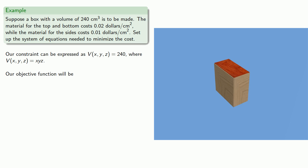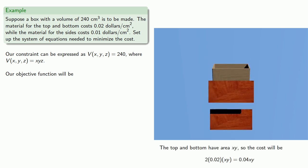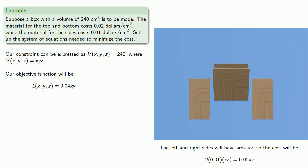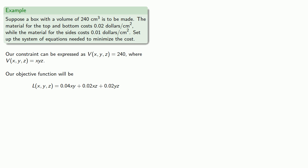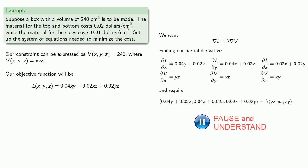Now we're trying to minimize the cost, so let's explode the box and determine what our cost function is. The top and bottom of the box have area xy, so the cost will be calculated accordingly. The left and right sides have area xz, and the front and back have area yz. And we're trying to minimize this total cost, so that will be our objective function. And we want the gradient of our objective to be lambda times the gradient of our constraint. So we find those partial derivatives. And that gives us the vector equation. Comparing the components gives us the system of equations.